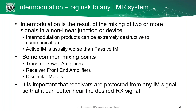Intermodulation is the result of mixing two or more signals in a non-linear junction. That means you can mix them in an amplifier, in the receiver front end, or in any place where you have dissimilar metals — this can be a connector, or even a rusty bolt on your tower. Whatever the source of the intermodulation, it's important that your receivers are protected from any intermodulation signal, so you can still hear your received frequencies without having them stepped on by any other transmit or carrier in the area.